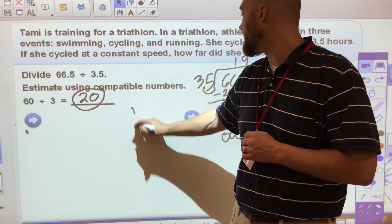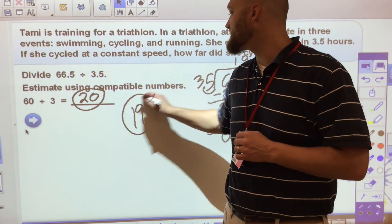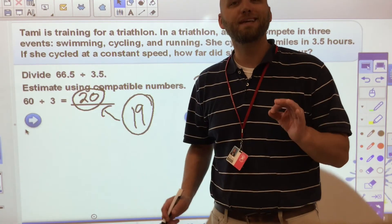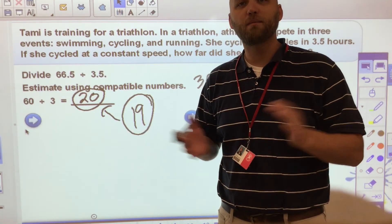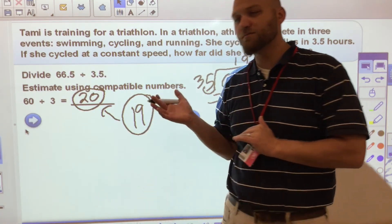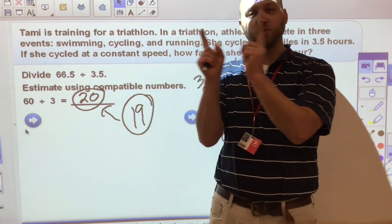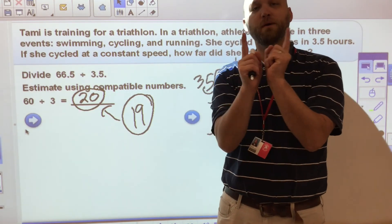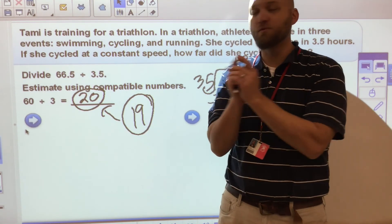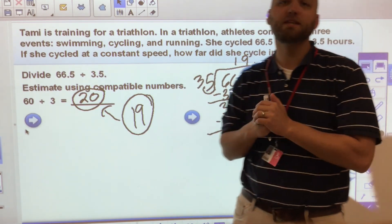What I end up with is an answer of 19. And I ask myself, is 19 close to 20? Yes, it is. So I'm probably correct. Again, dividing with decimals in both places, you can move the decimal in the divisor and the dividend as long as you move them both an equal amount. So move it one place in one, you move it one place in the other.